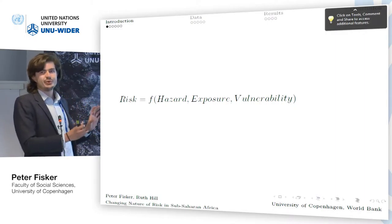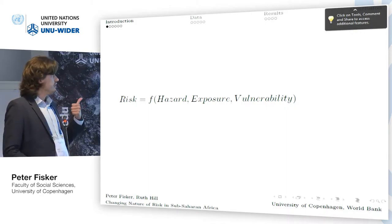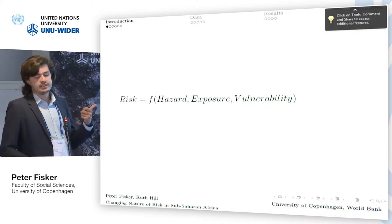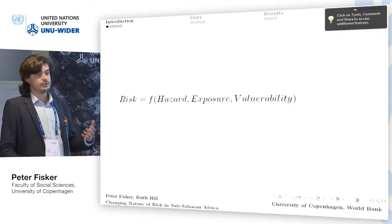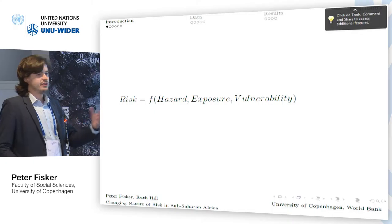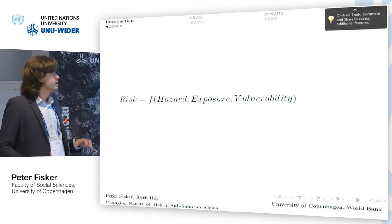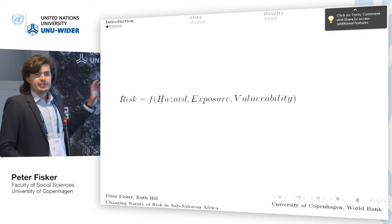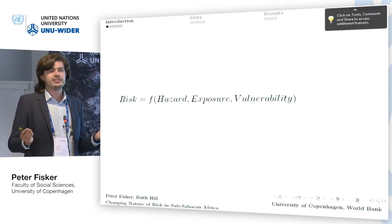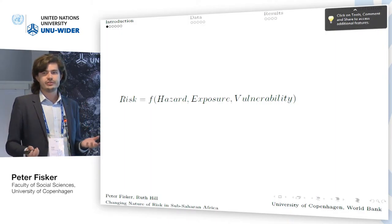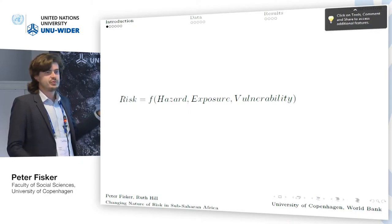When you talk about risk or disasters, there needs to be a hazard. A hazard could be a natural event such as a drought or a flood, it might also be a disease, or human-created technological hazards such as a nuclear power plant that might explode. For it to be a real risk or a disaster, there also needs to be some exposure. If an earthquake happens in the middle of Antarctica, nobody cares and it will not turn into a disaster — so there needs to be somebody exposed to this hazard.